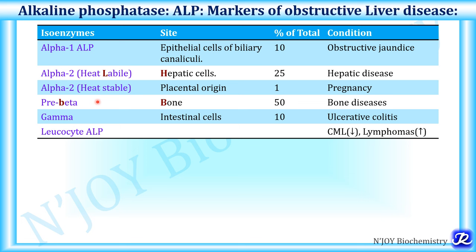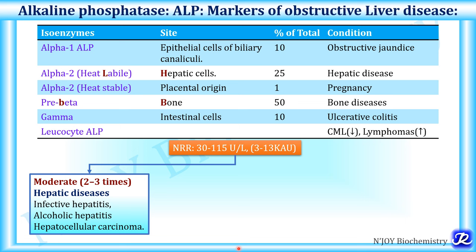The normal reference range of ALP is 30 to 115 units per liter, though it differs for different age groups — it is higher in growing children. A moderate increase of 2 to 3 times normal denotes hepatic diseases like infective hepatitis, alcoholic hepatitis, or hepatocellular carcinoma. Very high levels of 10 to 12 times increase are seen in obstructive conditions such as extrahepatic obstruction (obstructive jaundice) and intrahepatic cholestasis like infective hepatitis due to viruses or drug toxicity from chlorpromazine.